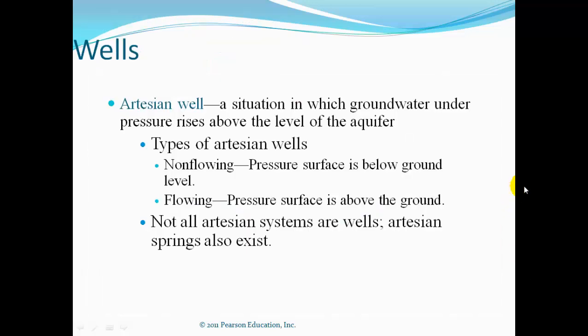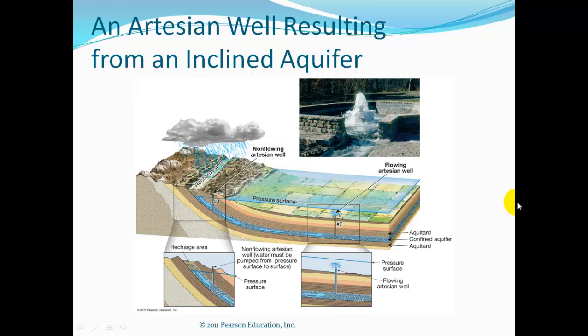Artesian wells are situated where groundwater is under pressure and rises above the level of the aquifer. There are non-flowing artesian wells where the pressure surface is still below ground level, and flowing ones where the pressure surface is above the ground. Not all artesian systems are wells — artesian springs also exist. In the diagram, the aquifer is between two confining layers, open to the ground surface where it recharges from rainfall, building pressure. A well drilled below the pressure surface allows the water to pump itself up and out; one above the pressure surface needs a small pump to carry the water to the top.